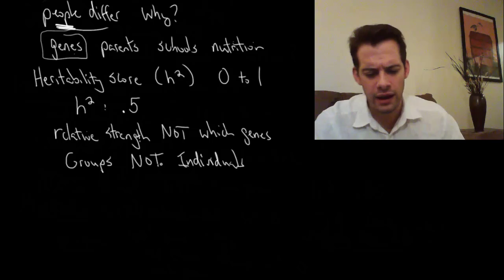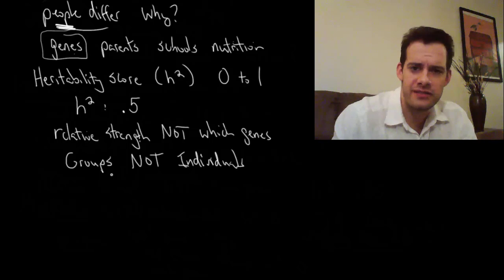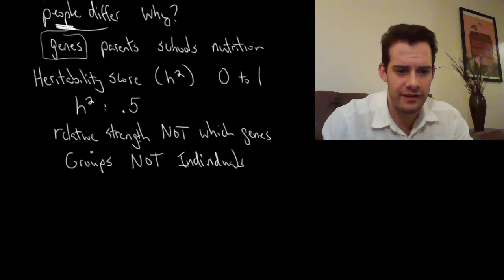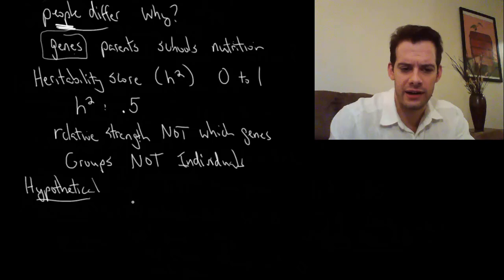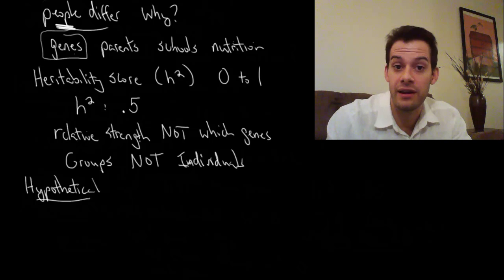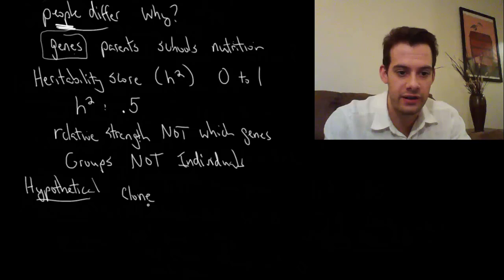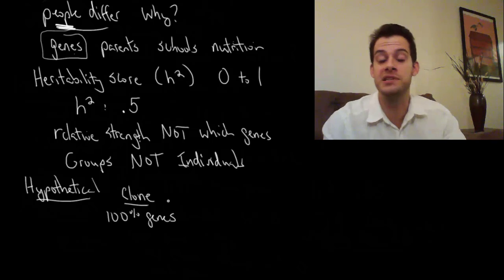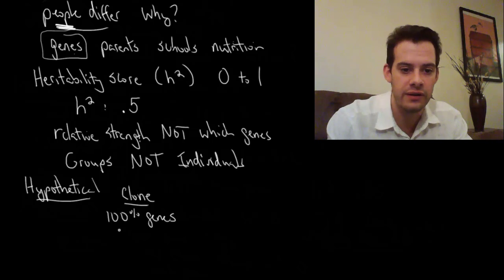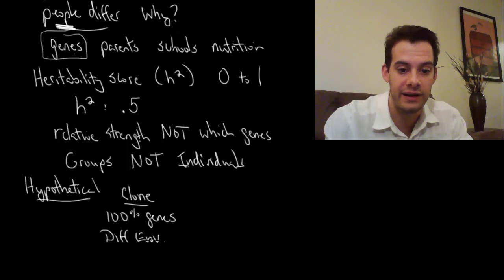Okay, so a good way to think about this is to imagine two extreme situations. These are hypothetical—they aren't really going to happen. But hopefully they'll clear up this idea of what a heritability score is. So one hypothetical is we go to some town and everybody there is a clone. So this is the clone town here. So that means that everybody has 100% of the same genes.